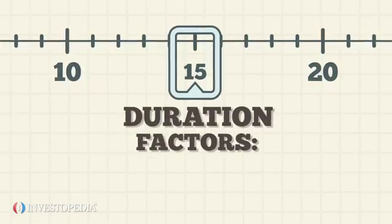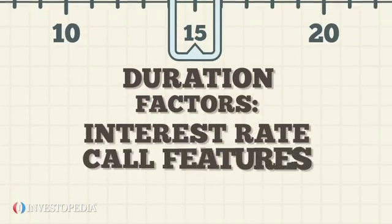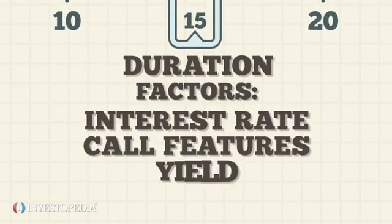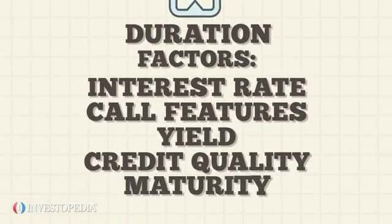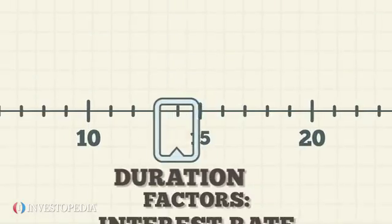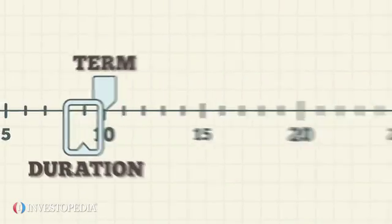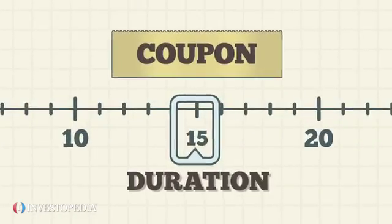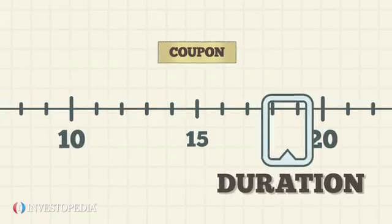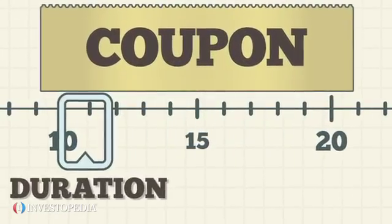A bond's duration depends on its interest rate, call features, yield, credit quality, and maturity. The shorter the bond term, the lower the duration and vice versa. Also, the lower the coupon, the higher the duration and vice versa.